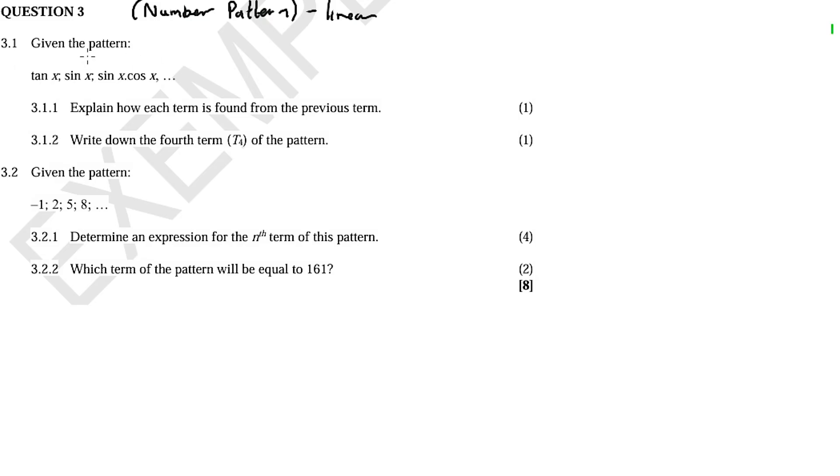In 3.1, we are given the following pattern: tan x, sin x, sin x times cos x. Let me just write it here: tan x, sin x, sin x multiplied by cos x, then it continues.